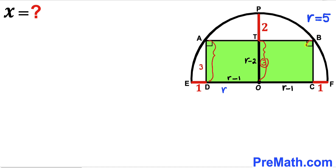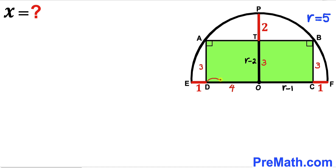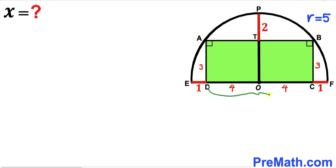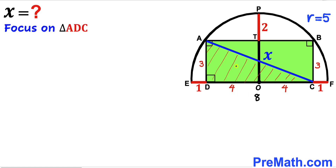If OT is 3 units, then AD length is 3 and likewise BC length is 3 units as well. OD is going to be r − 1 = 5 − 1 = 4 units, so OD = 4 units and OC = 4 units as well. Therefore the whole side DC is 4 + 4 = 8 units.